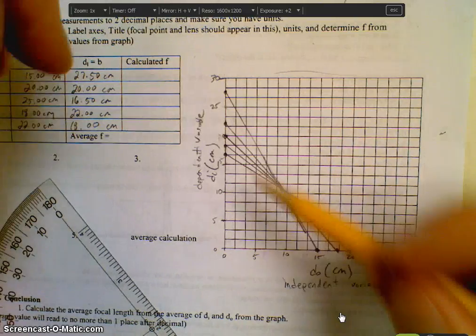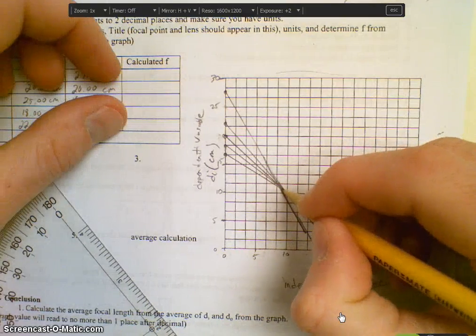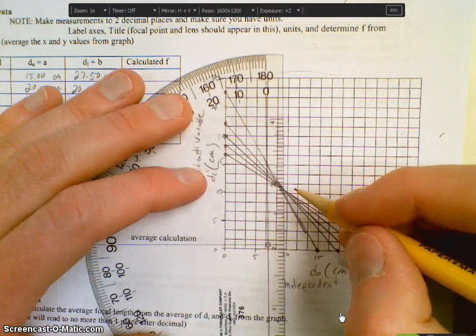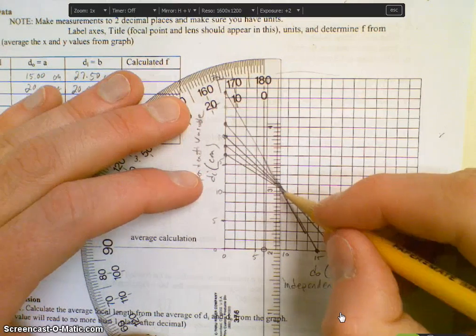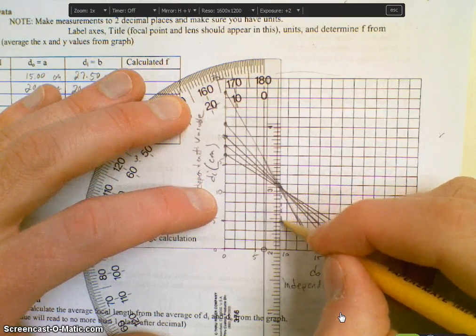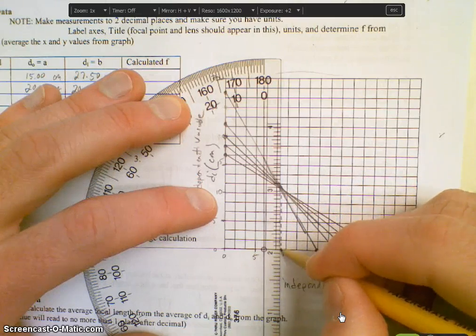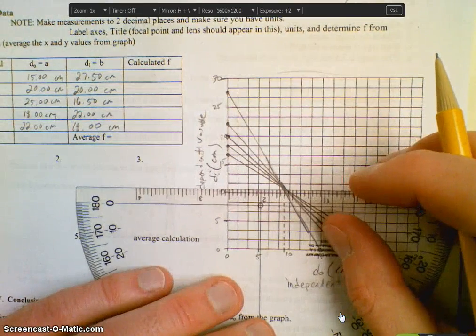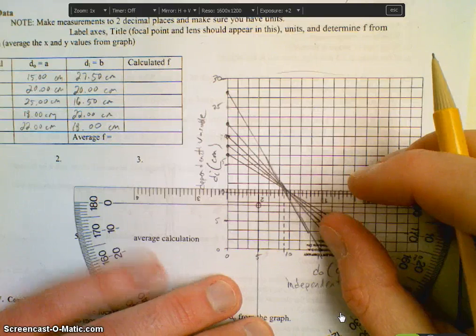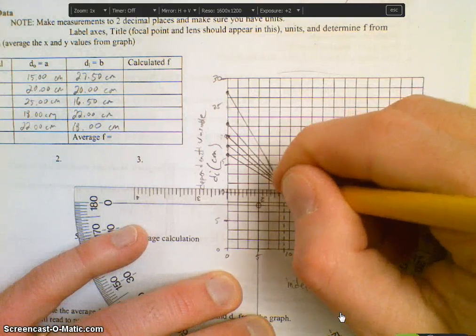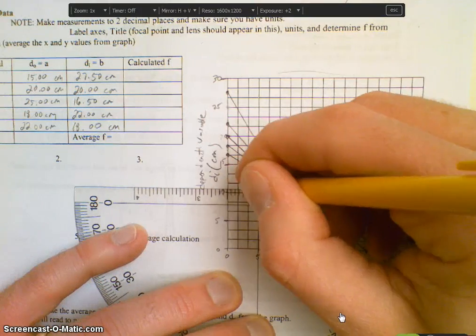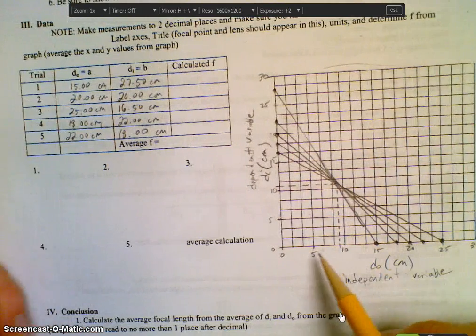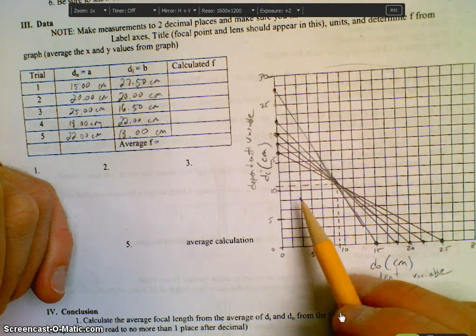That looks really good. So we have this intersection point which is right here. And what we're going to do is we're going to drop a perpendicular line. And then we're going to drop one horizontal line this way. And now what I'm going to do is I'm going to read these and these are going to be my focal lengths.